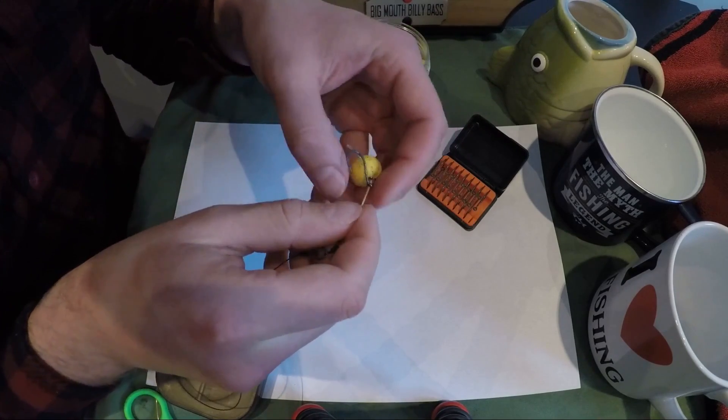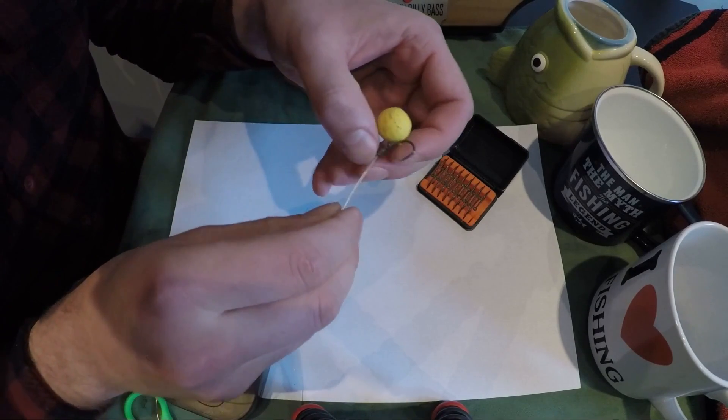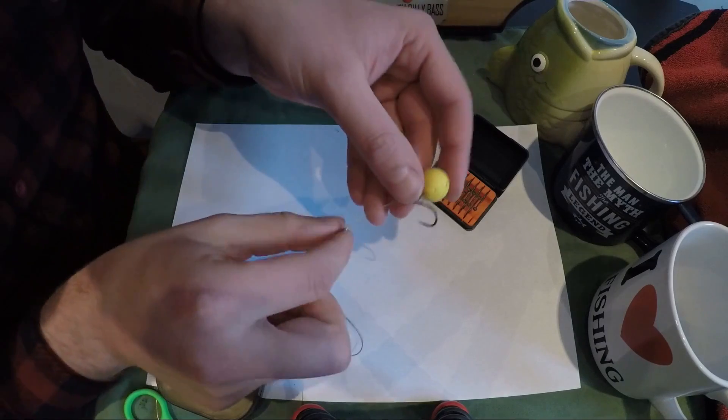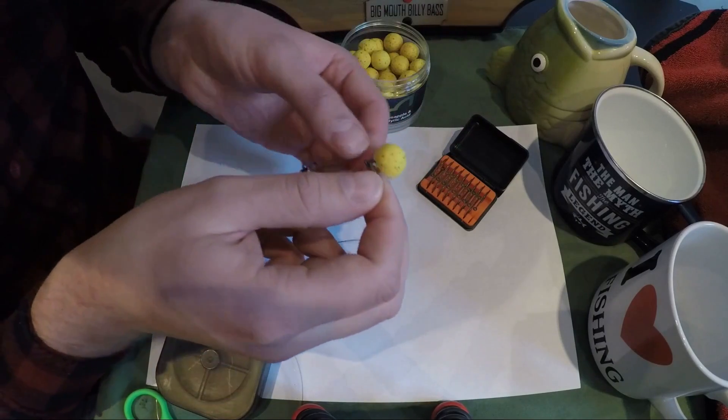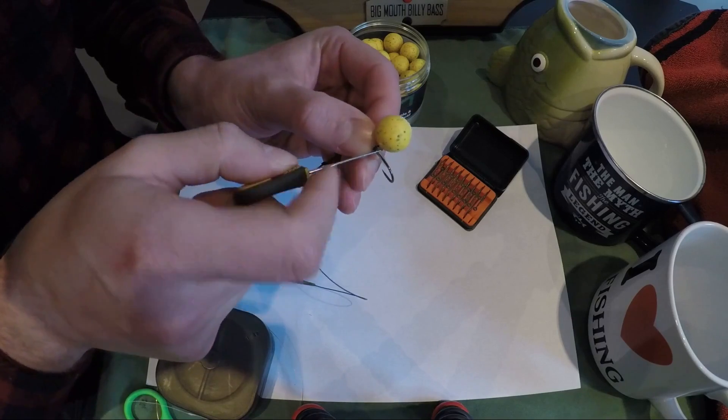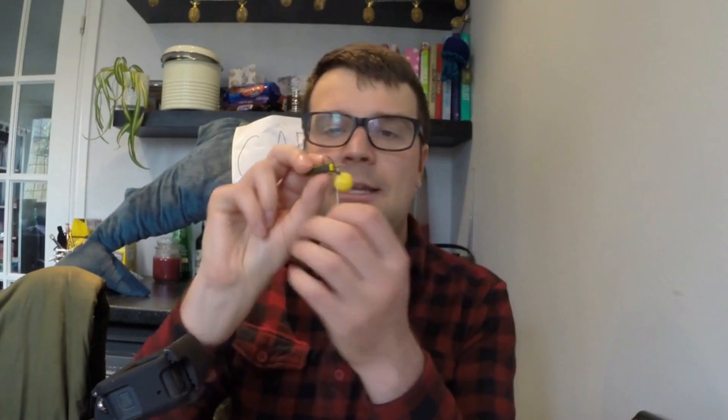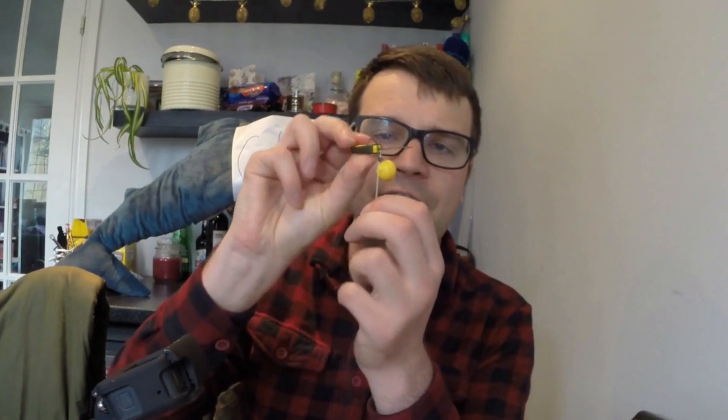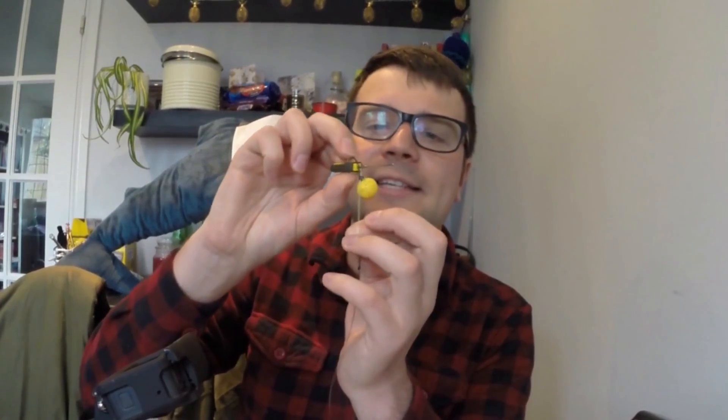There we are, pull it down. Now that forms your little D-rig effect. Just to exaggerate that, what I do is put a baiting needle in the loop there, and if you pull on the hook section pushing the baiting needle up to the top of the hook, it will form a little D for you.